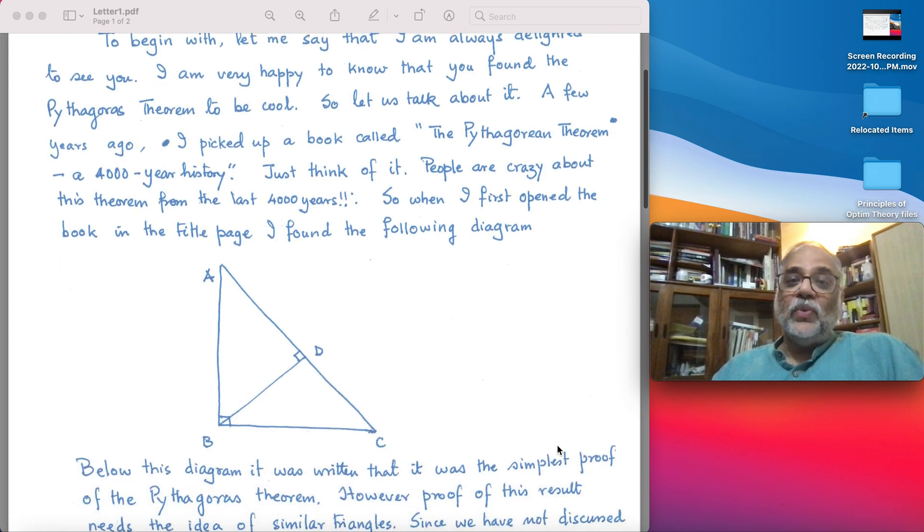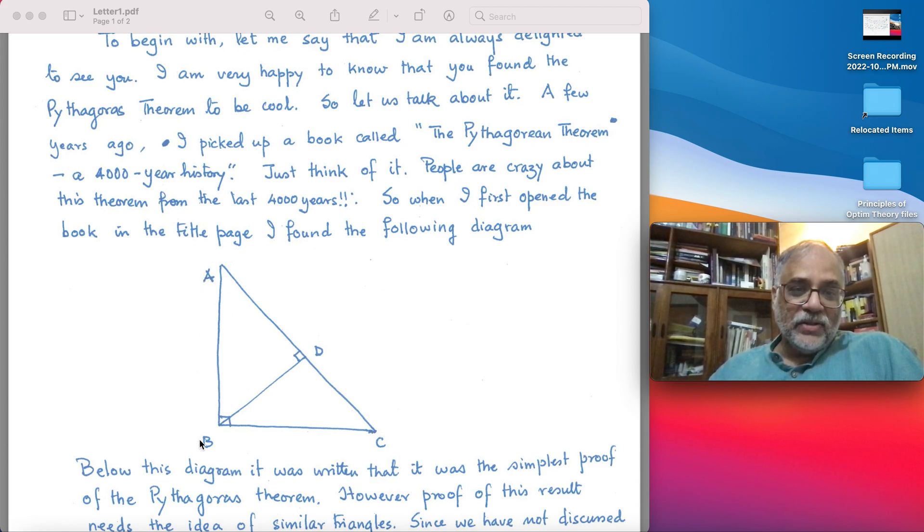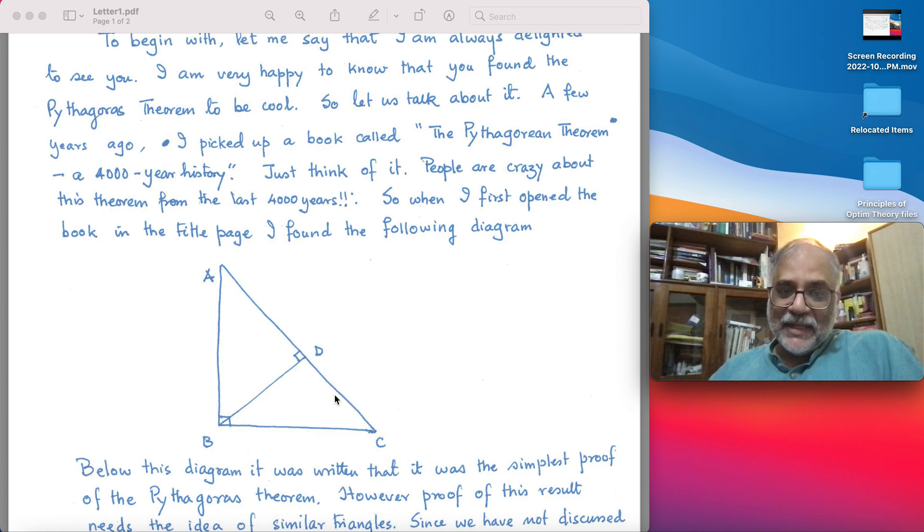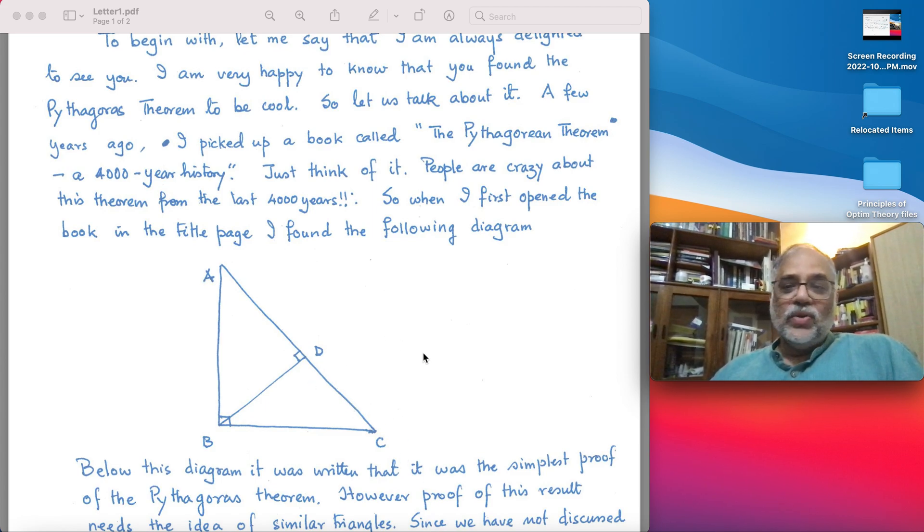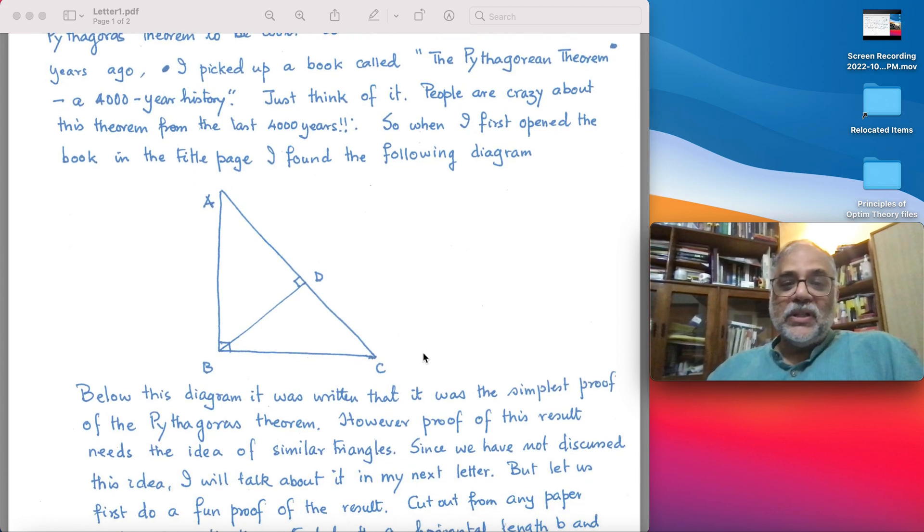When I first opened the book on the title page, I found the following diagram: Here is a right angle triangle ABC where ABC is the right angle, and from the vertex B, which is opposite to the hypotenuse AC, a perpendicular BD is drawn meeting the hypotenuse AC at D.